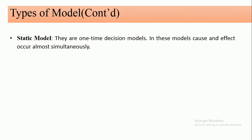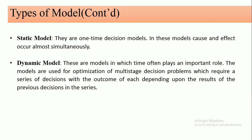We also have the static model. As the name implies, it is a one-time decision model where cause and effect occur simultaneously — everything happens at the same time. The opposite is the dynamic model. In dynamic models, time plays an important role. They are used for optimization of multi-stage decision problems requiring a series of decisions, where the outcome of each stage impacts the next.